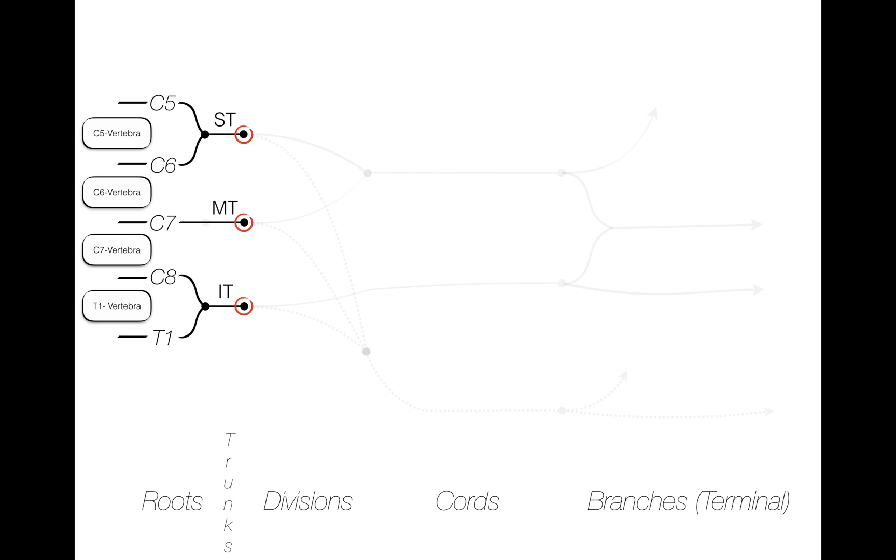This is because the posterior division of all three trunks merges with the others. When they do so, the new structure is appropriately called the posterior cord. Notice how we have already dealt with three of the six total divisions. Later, any branch that comes from the posterior cord will either travel posteriorly away from the posterior cord or will have a primary path and function within the posterior arm or forearm.